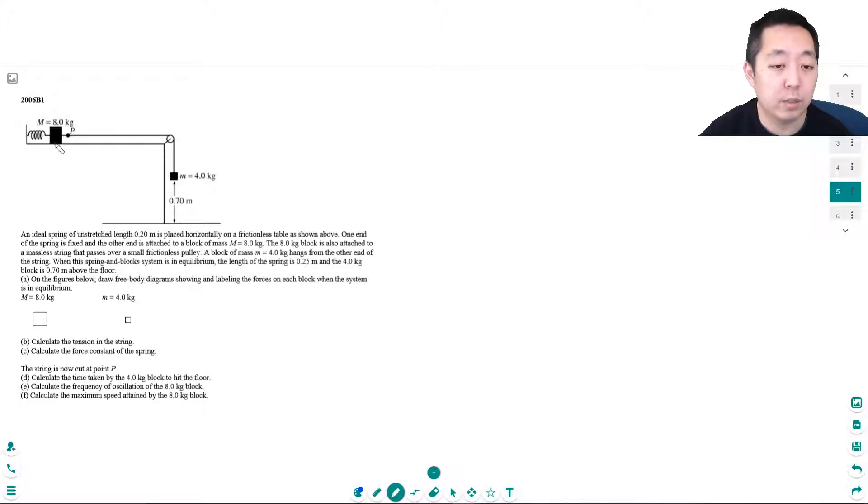The 8 kilogram block is also attached to a massless string which passes over a small frictionless pulley. A block of mass little m hangs from the other end of the string. When the spring and block system is in equilibrium, the length of the spring is 0.25 meters and the 4 kilogram block is 0.7 meters below the floor.